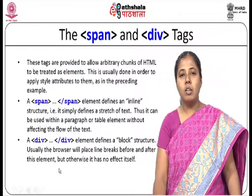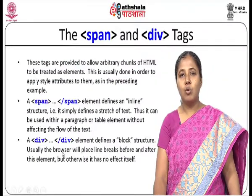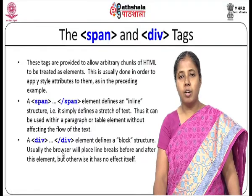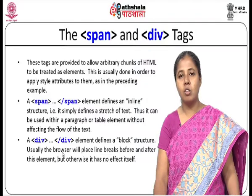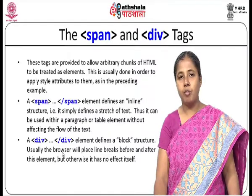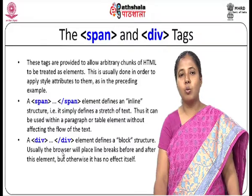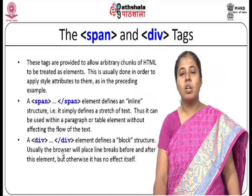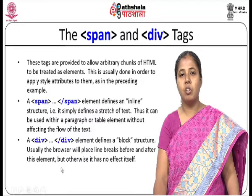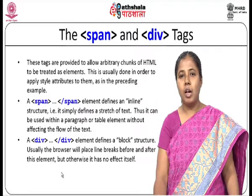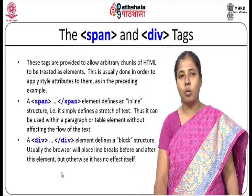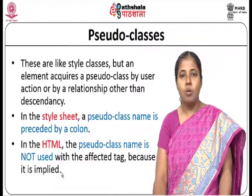The span and div tags are very useful when using cascading style sheets. The span tag defines an inline structure — you apply it to a chunk of text to apply style information. The div tag defines a block structure and usually places line breaks before or after the element, affecting the chunk of content within it.